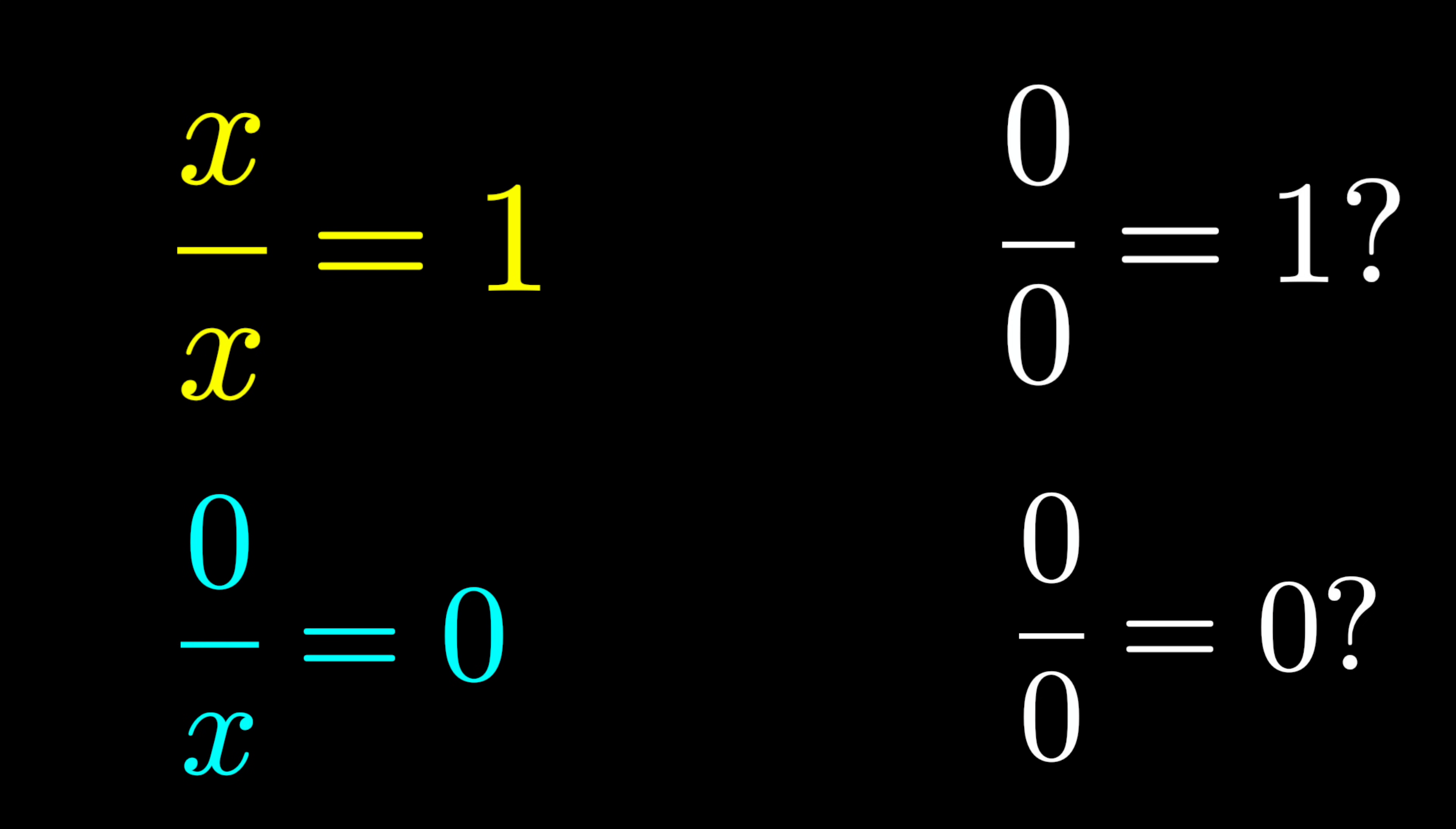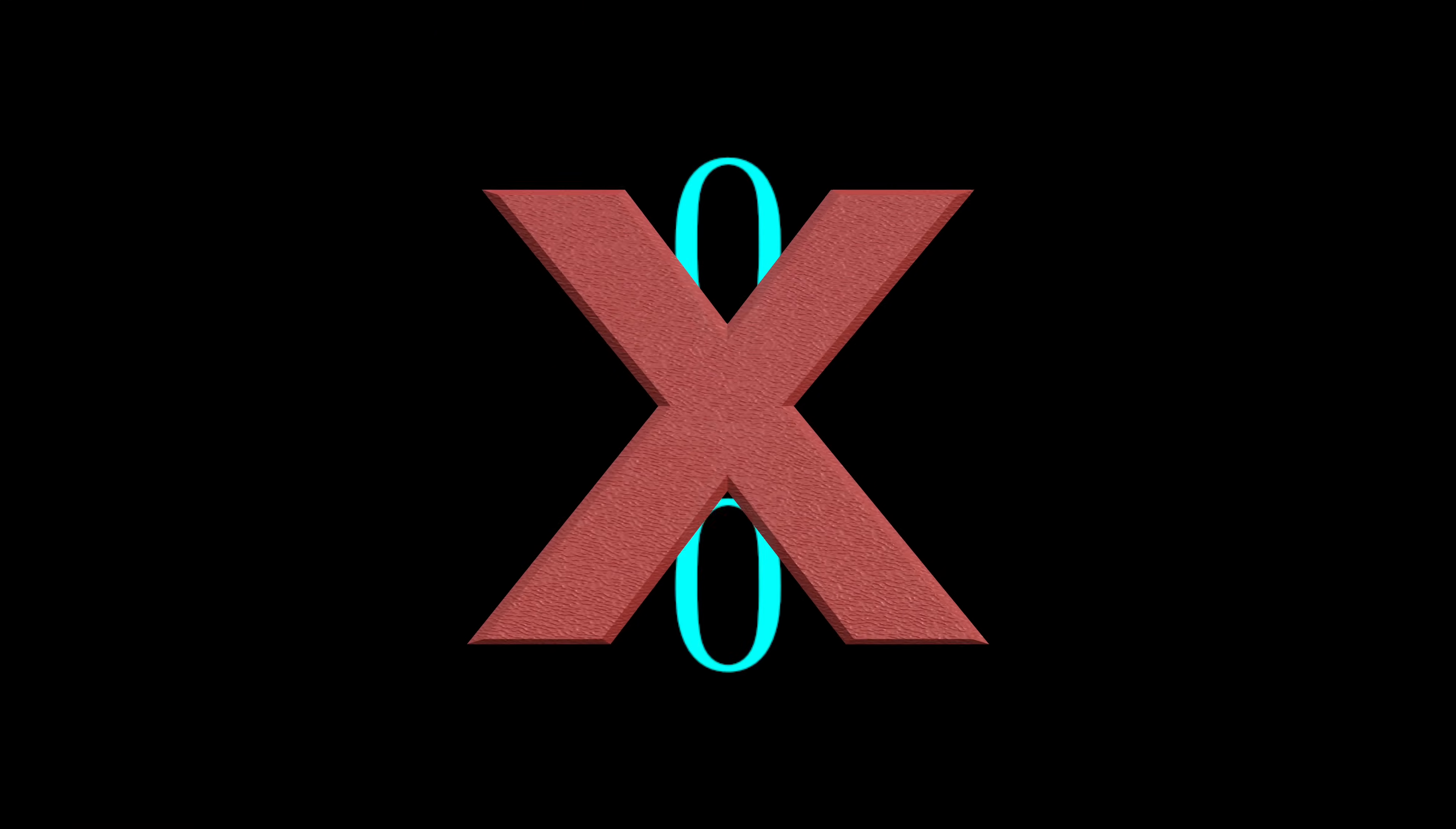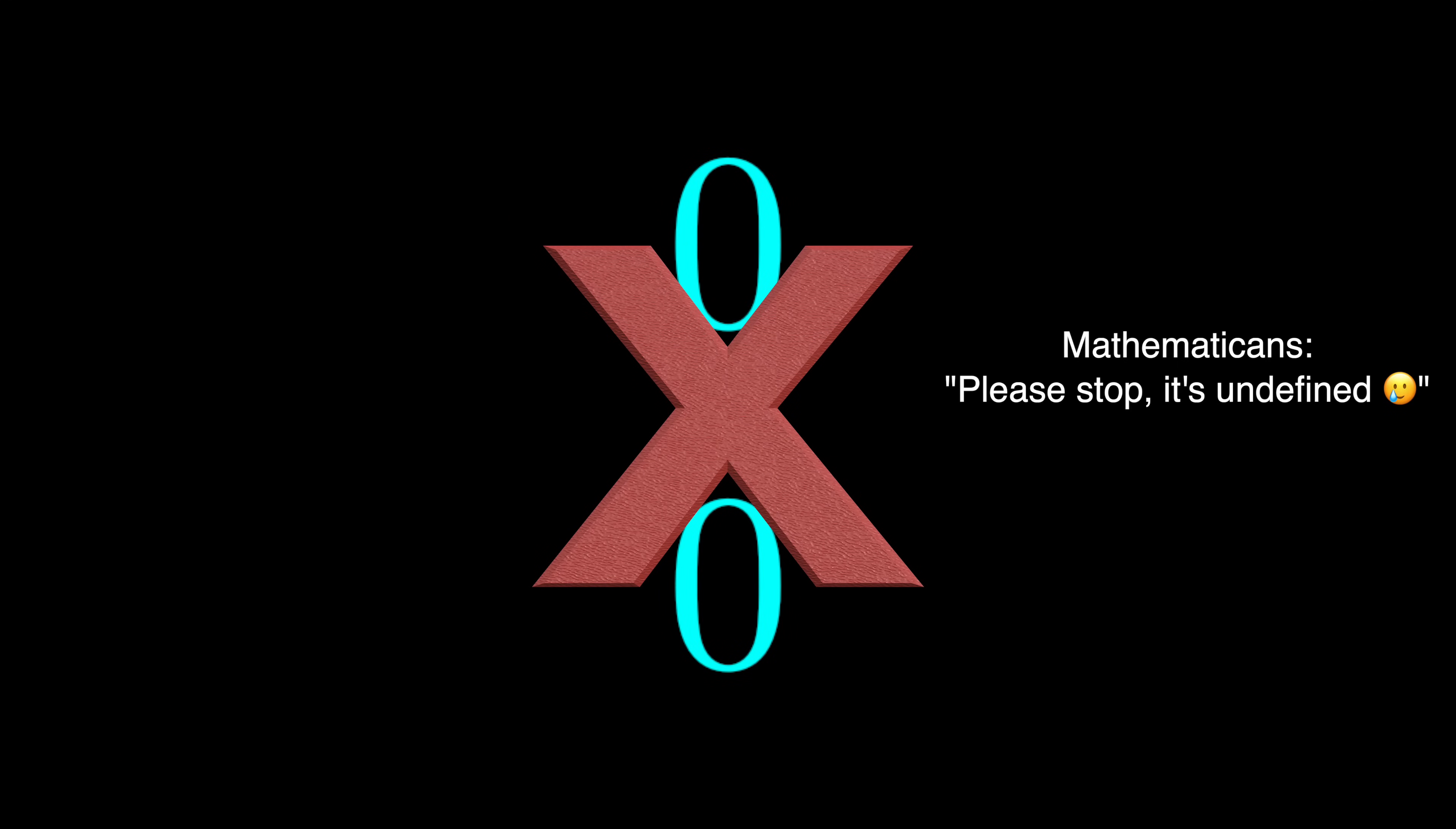These statements are used so often they're taken as rules, and in fact they are rules when the denominator isn't zero, which it is in this case. At this point, the mathematical community has decided that there's no real good definition for zero over zero, and has chosen to leave it as undefined, and for good reason.